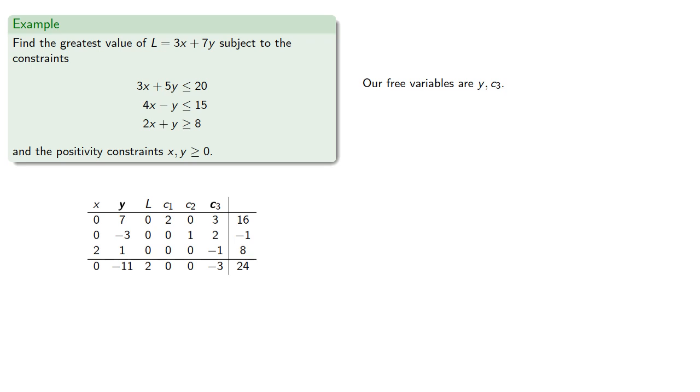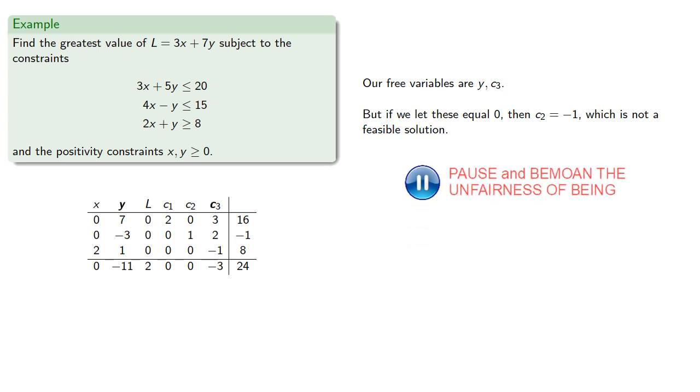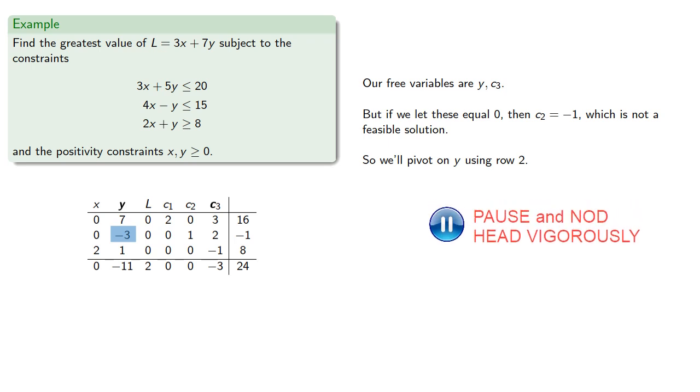Now our free variables are y and c3. But again, if we let our free variables be 0, then c2 is negative 1, which is not a feasible solution. So in the first row with a negative constant, the first negative coefficient is y. So we'll pivot on y in row 2. And this will make y basic and c2 free, and so we row reduce to get...